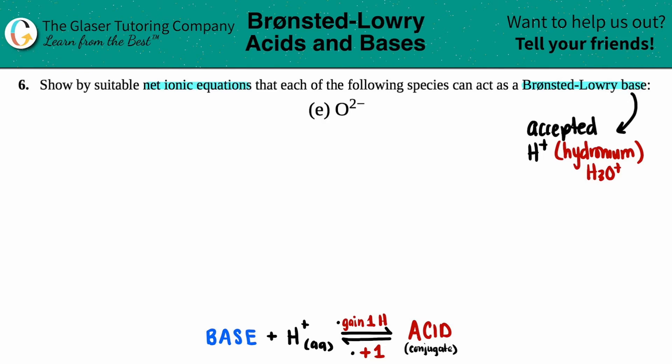So Bronsted-Lowry bases, they always accept the hydrogen from the acid. I can guess that this is only going to be a base because this oxygen has no hydrogens to give. It has no H's to give, right? So it can only accept.